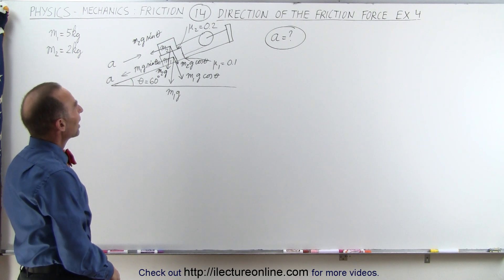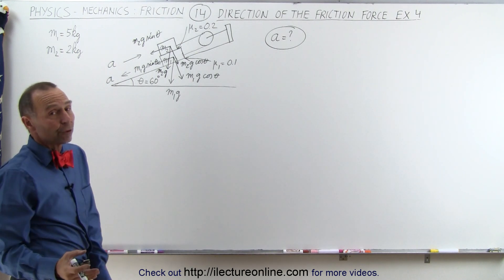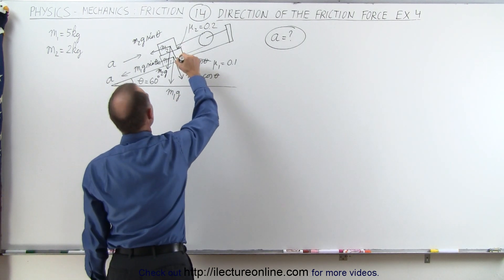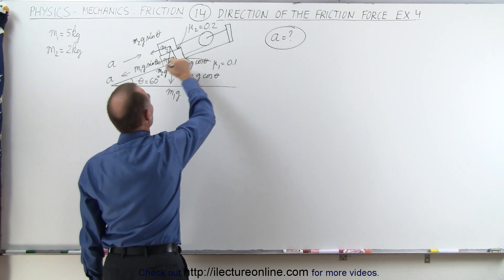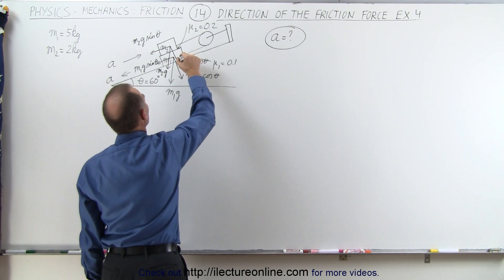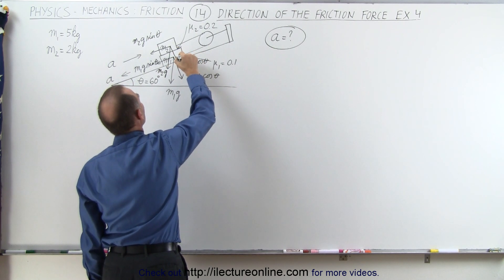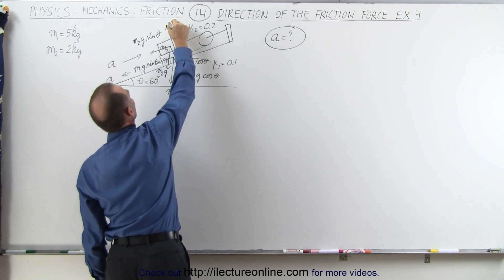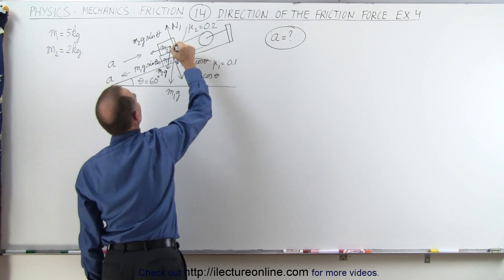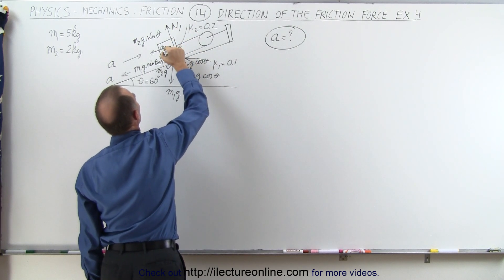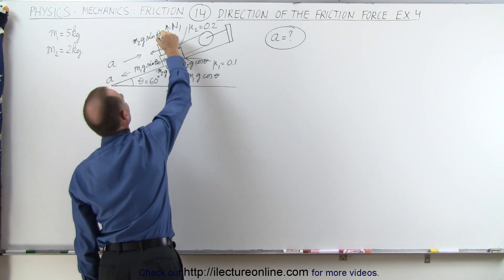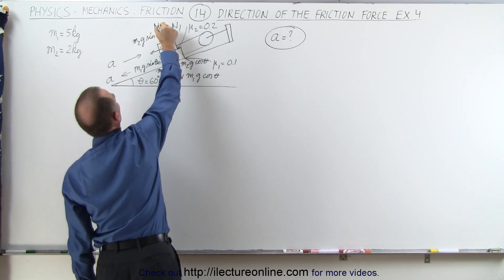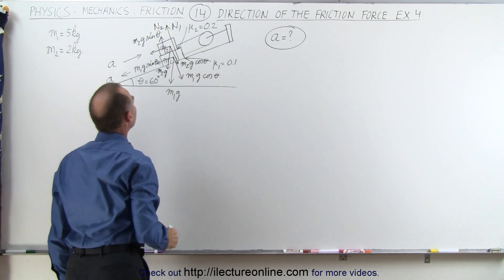Now we have two normal forces. We have the normal force between the surface of the wedge and the block m1 — let's call this N1 — and we have the second normal force between the two blocks. Let's call it N2.